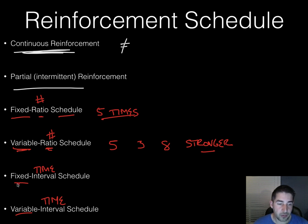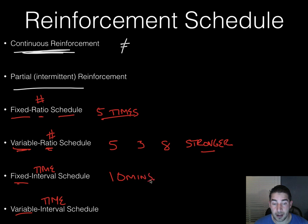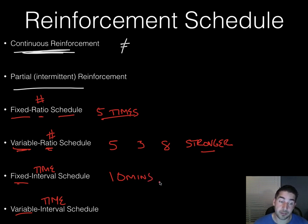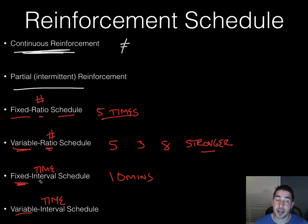Fixed interval means reinforcement is given after a specific, known period of time. For example, if you stay quiet for 10 minutes, you get an extra minute at recess. Fixed means you know exactly what it is; interval means time. So on a fixed interval schedule, you know exactly how long you need to maintain the behavior.